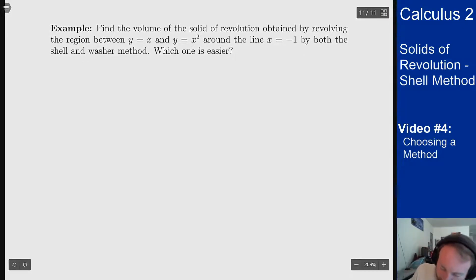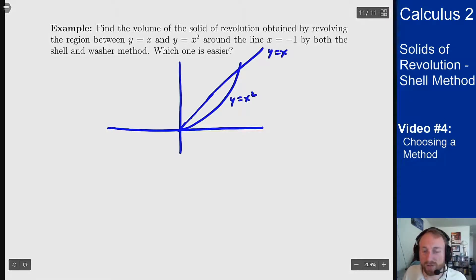So what's our region look like? That's the parabola and the straight line. We've seen this region before in earlier videos and the region I care about is this part in here. I'm revolving around the line x equals minus one which is over here.